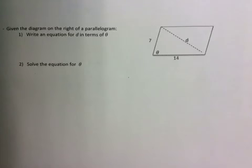Okay, last question. Given the diagram on the right of a parallelogram, write an equation for d in terms of theta. So what we're going to need to do is use law of cosines again. So we're going to go d squared equals 14 squared plus 7 squared minus 2 times 14 times 7 cos theta.